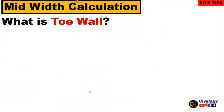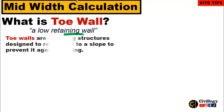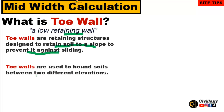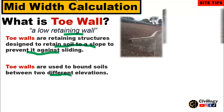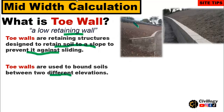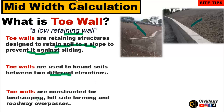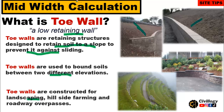Let us briefly define what is a toe wall, its purpose and advantages. It is actually a low retaining wall — a type of retaining wall which is lesser in height. Toe walls are retaining structures designed to retain soil on a slope to prevent it from sliding. They are used to bound soils between two different elevations. As you can see in these two pictures, slope is maintained between points of two different elevations. Toe walls are constructed for landscaping, hillside farming, and roadway overpasses.